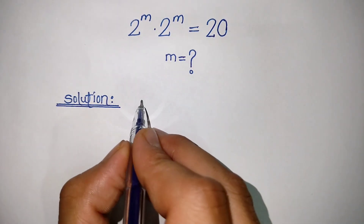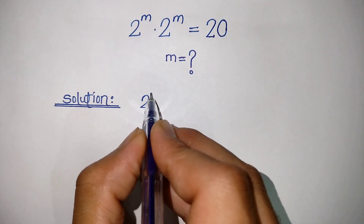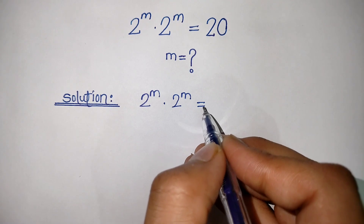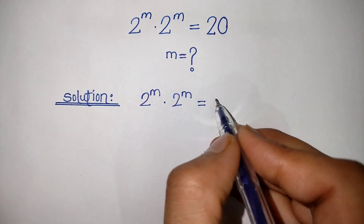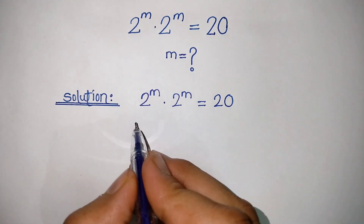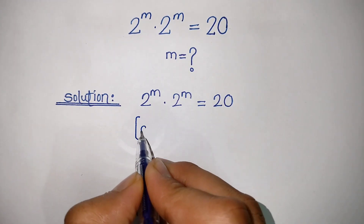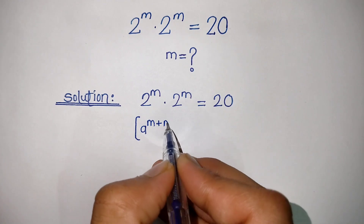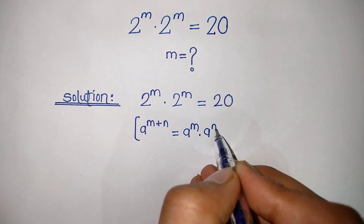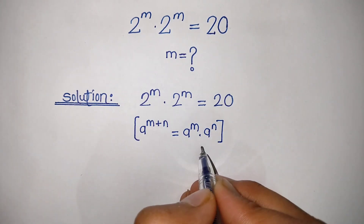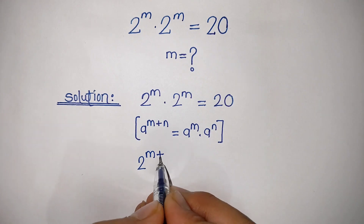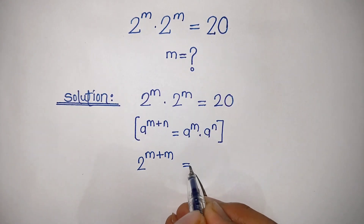Solution: 2 power m times 2 power m is equal to 20. Now we know the exponential rule that is a to the power m plus n is equal to a to the power m into a to the power n. By using this rule we can write 2 to the power m plus m is equal to 20.